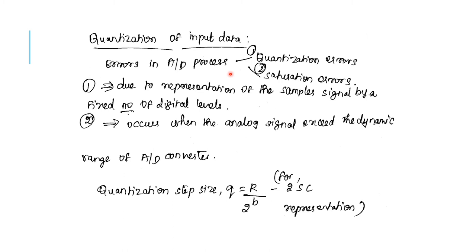The sampler will sample the value of the analog signal at uniform intervals to produce a sequence of unquantized values of the signal. The quantizer will quantize the analog value and produce the corresponding binary codes. This process of assigning a binary number to a quantized analog value is also called coding.